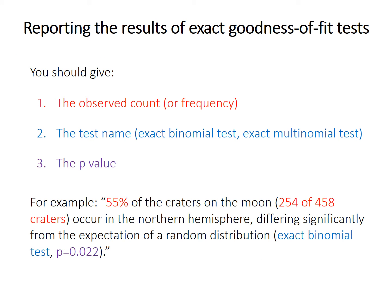For either of these tests, when reporting results you should give your observed counts or frequency percentages, the test name (exact binomial or multinomial), and the p-value. Since these are exact tests, there is no test statistic and no degrees of freedom to worry about, but you may want to explain why you chose a particular expectation. You can include the observed counts, the test name, and the p-value in your summary.